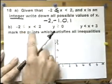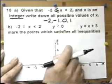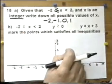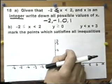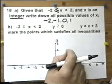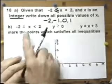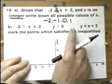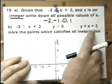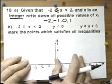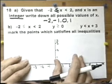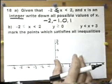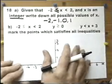We've now got 3 inequalities, and the question says a little bit more than on the paper. If x and y are both integers — both whole numbers — mark on a grid with a cross each of the 10 points which satisfies all 3 inequalities. There's a little bit more written on the exam paper than on this paper here.